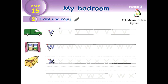My dear students, open your book, page 23, and let's do activity number two: trace and copy. Look. What is the letter? It's letter V. The sound is V. V is for van. Trace with pencil like this, and then copy.